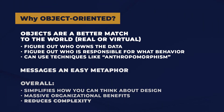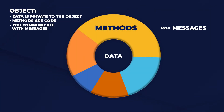So let's take a quick look. What does an object look like? Here's a representation of an object. It has data and it's surrounded by methods. Data is private to the object. Methods are code, and you communicate with messages.